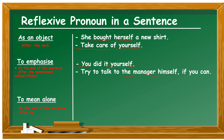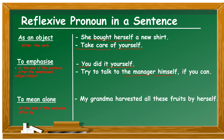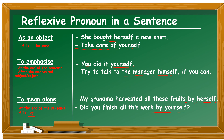When reflexive pronouns show that the subject is alone in doing something, they always come at the very end of the sentence and are always preceded by the preposition 'by.' For example, 'my grandma harvested all these fruits by herself' — the reflexive pronoun comes at the end, preceded by 'by.' Another example: 'did you finish all this work by yourself?' — again, the reflexive pronoun is at the end of the sentence, preceded by 'by.'